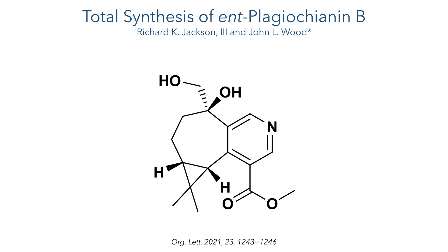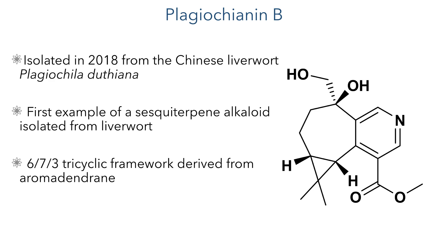The work we are going to look at in this video was published by the Wood Group in Organic Letters. Plagiocyanin B was first isolated in 2018 from the Chinese liverwort plant Plagiochila duthiana. It is the first example of a sesquiterpene alkaloid isolated from a liverwort and it contains a unique 6-7-3 pyridine-containing framework, and is believed to be synthesized from aromadendrane. Molecules isolated from this liverwort have previously been shown to possess cytotoxic, antifungal, and neurotrophic activities. However, preliminary investigations have not revealed any antifungal or anti-cancer activity for either Plagiocyanin A or Plagiocyanin B.